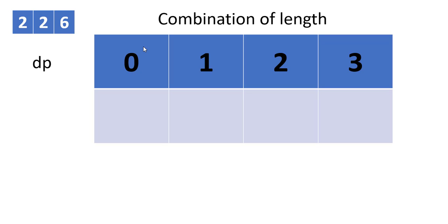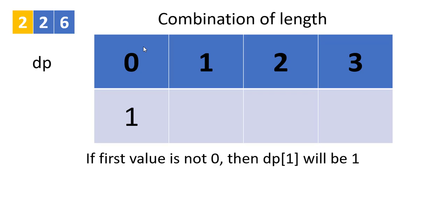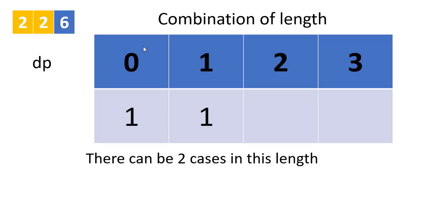An empty string can only be decoded in one way, so we put 1 in dp[0]. To put the value at dp[1], we check if the first character is 0 or not. If it is 0, then dp[1] is 0, otherwise it is 1. In this case the first character is 2, so we put 1. Starting from index 2, we loop till the end of the string. At dp[2], we consider the value up to length 2 of the string. There are two cases.